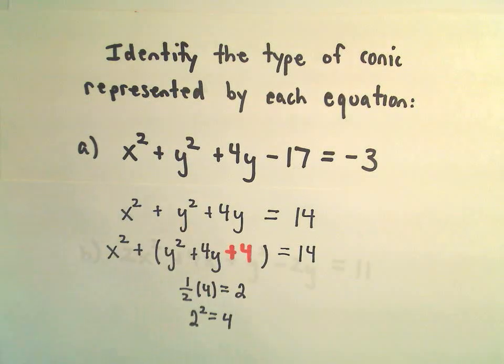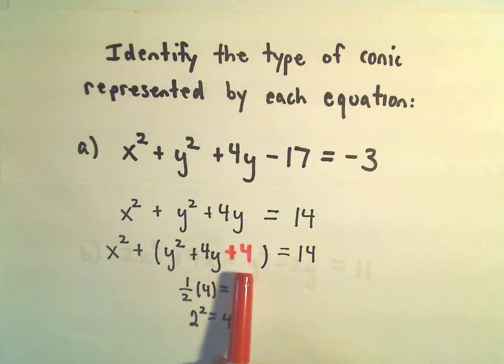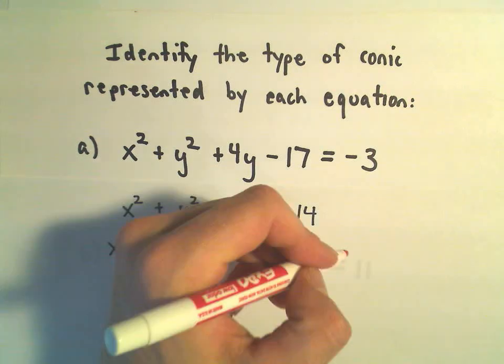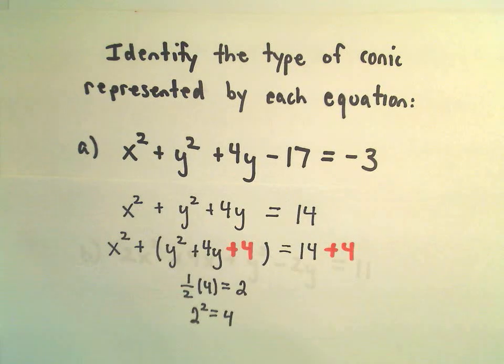Again, if you were to multiply, if you were to get rid of the parentheses, there would be a positive 4 on the left side that wasn't there before. So I'm going to have to add 4 to the right side as well.